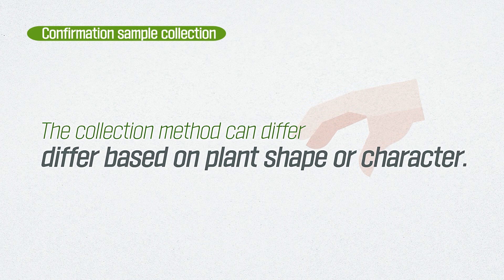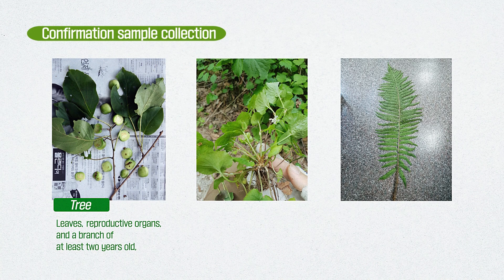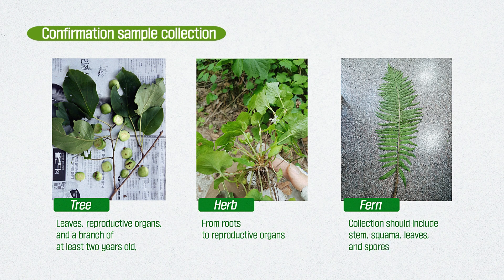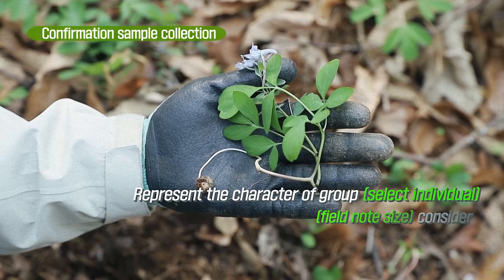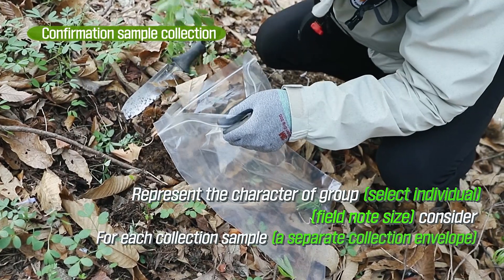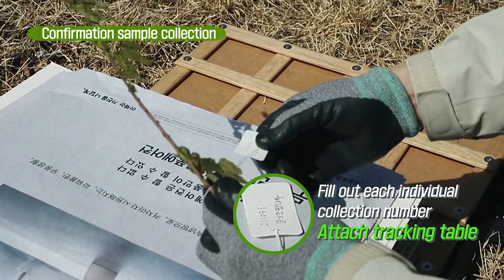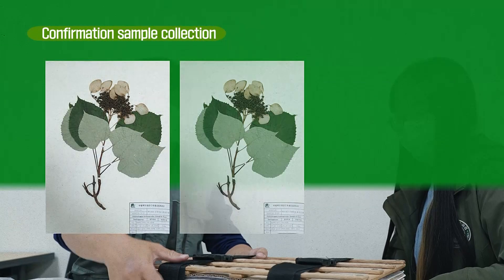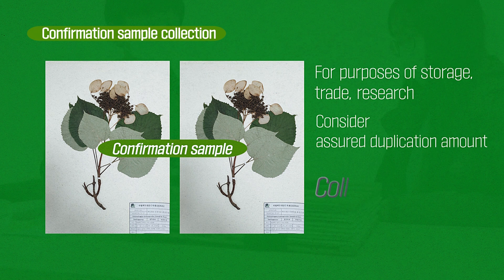The collection method can differ based on plant shape or character. The vegetative organ and reproductive organ must be included. In the case of trees, you need to collect leaves and reproductive organs including branches at least 2 years old. Herb collection must include the roots to the reproductive organs. For ferns, you need to collect stem, squama, leaves, and spores. When collecting a confirmation sample, select an individual that is able to represent the character of the group. Consider the size of the field node and prepare a separate collection envelope for each sample. Fill in the tracking tables with the collection numbers and attach them to each individual, being careful it does not easily fall off. To assure duplication and consideration of the fact that they are restored, researched, and exchanged, collect at least 2 confirmation samples.